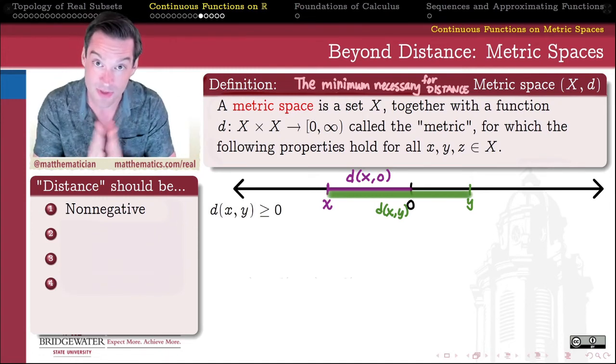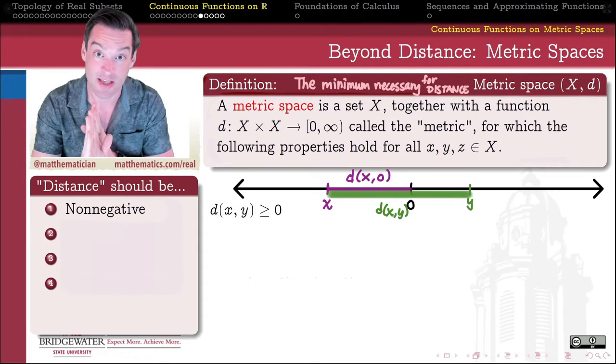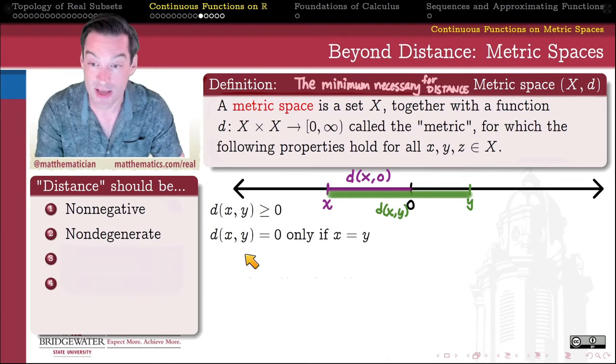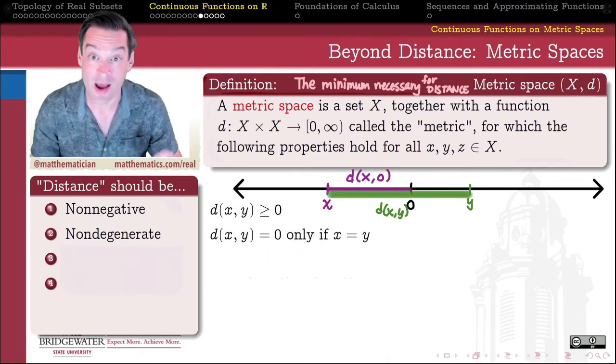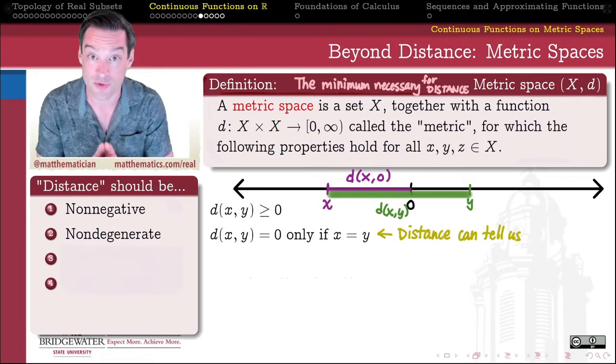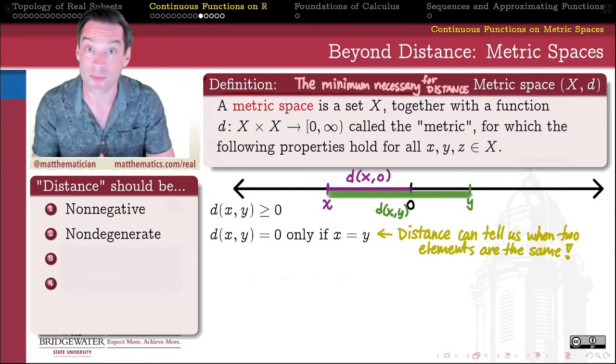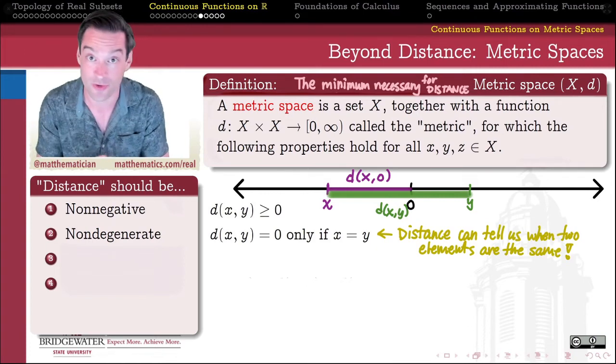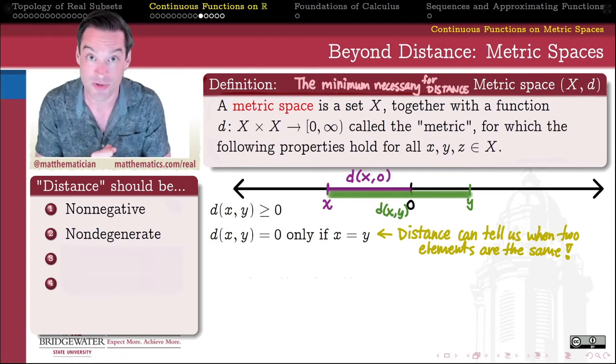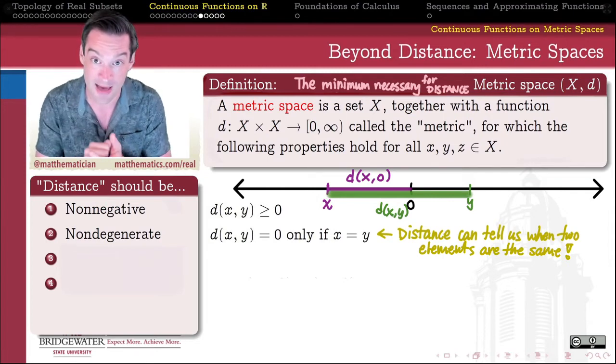The next property tells us that that zero distance only happens if I'm measuring the distance between a point and its very self. This is a property called non-degeneracy. A metric is non-degenerate because the distance between x and y is equal to zero only in the case where x and y are the same element of my set. And what's great about this is it gives us a way to use the metric, use a distance function, to detect sameness of two elements. If you hand me two elements in some random metric space and I measure the distance between them and I get zero, then I know for sure that you must have handed me two of the very same element. This non-degeneracy property is super helpful. It means that as soon as we get our distance down to zero, we know that we are exactly at the same point.